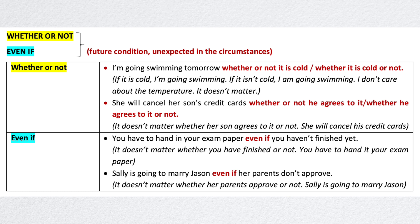'Whether or not' focuses on the fact that something will happen in any case or condition — it emphasizes that a specific situation will continue no matter what happens. Similarly, 'even if' is used to stress that something will happen despite something else that might prevent it. For example: 'I'm going swimming tomorrow whether or not it's cold' — or 'whether it's cold or not.' This means whether it is cold or not, I'm going swimming; I don't care about the temperature. Another example: 'She will cancel her son's credit cards whether or not he agrees to it.' It doesn't matter whether her son agrees — she will cancel his credit cards and his reaction won't affect her decision.